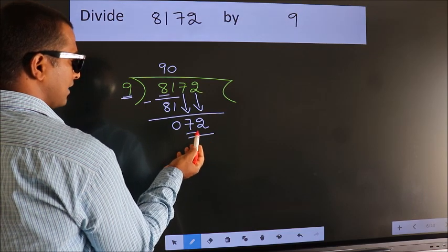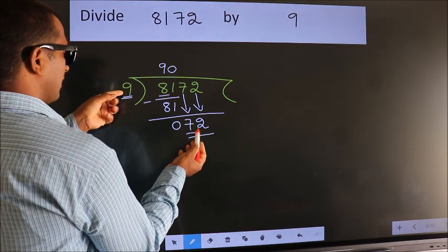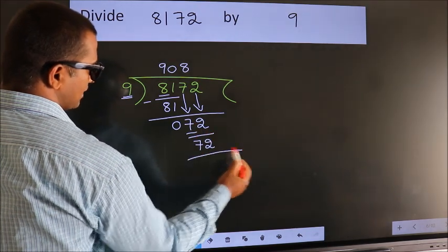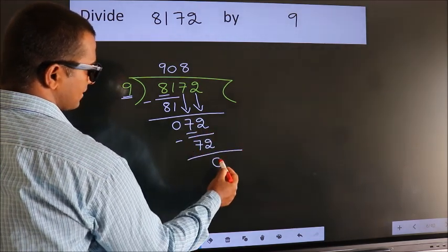When do we get 72 in the 9 table? 9 eights is 72. Now we subtract. We get 0.